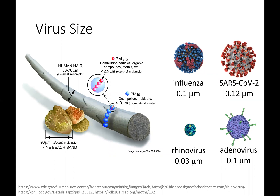Influenza virus — the flu virus — is 0.1 micrometers in diameter, so it's going to be more than 100 times smaller than a human hair. The SARS coronavirus 2 is slightly larger than influenza virus at 0.12 microns. Rhinovirus is quite a bit smaller at 0.03 microns. And adenovirus is 0.1 microns.